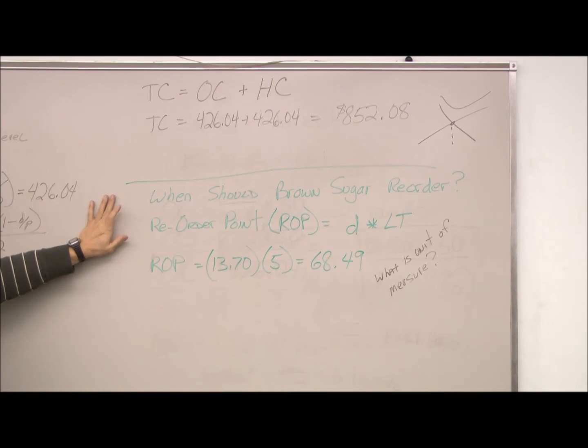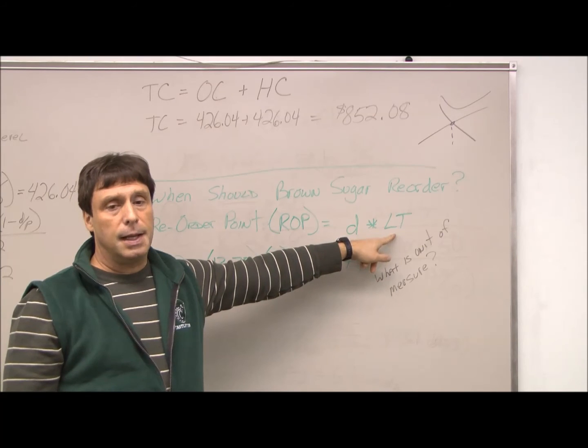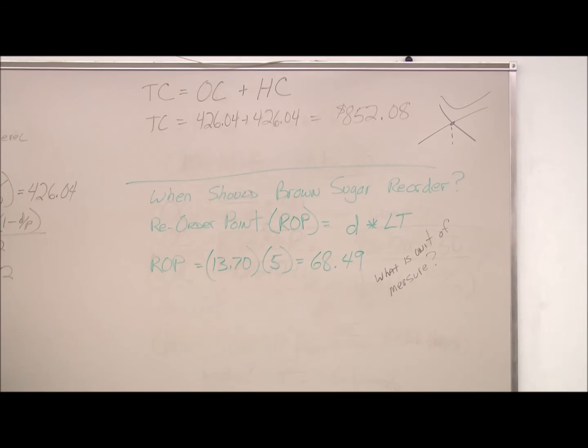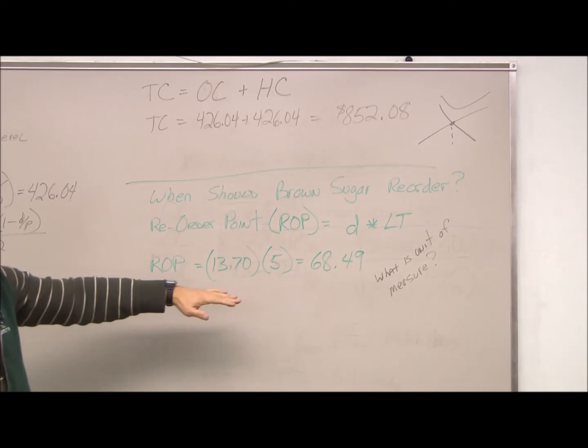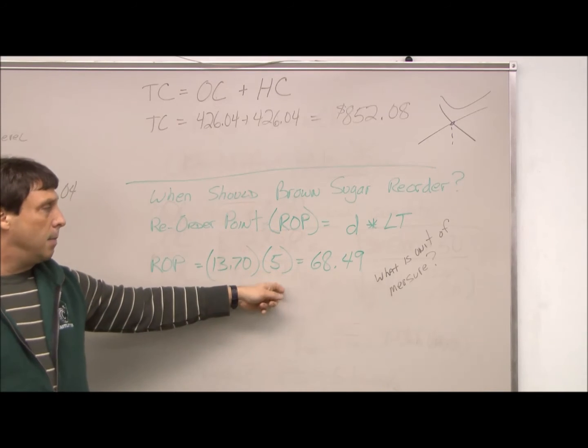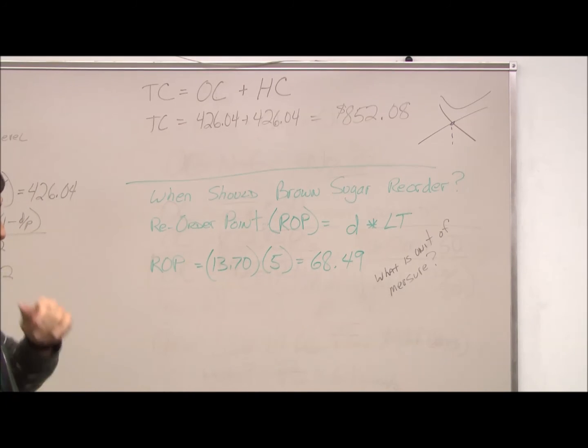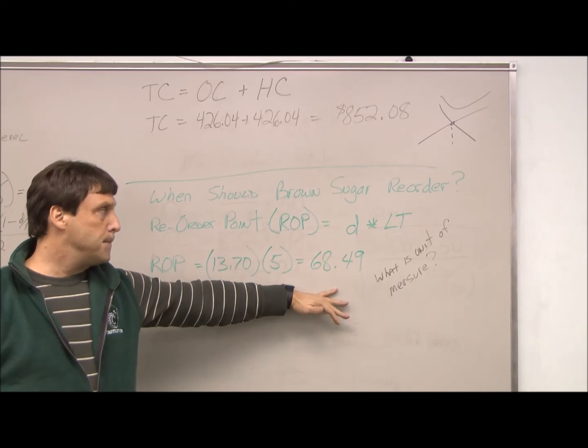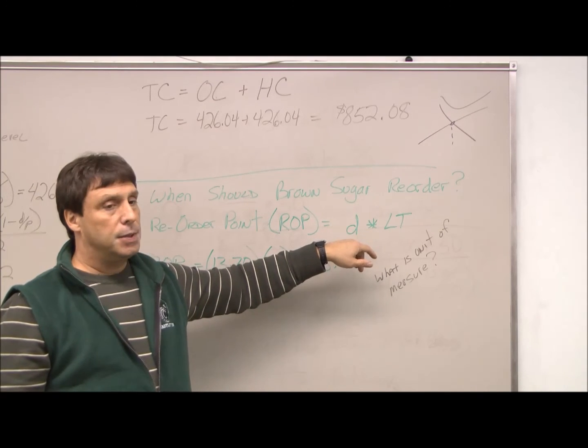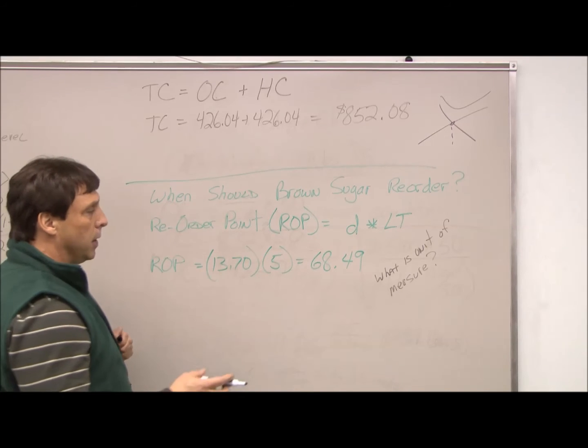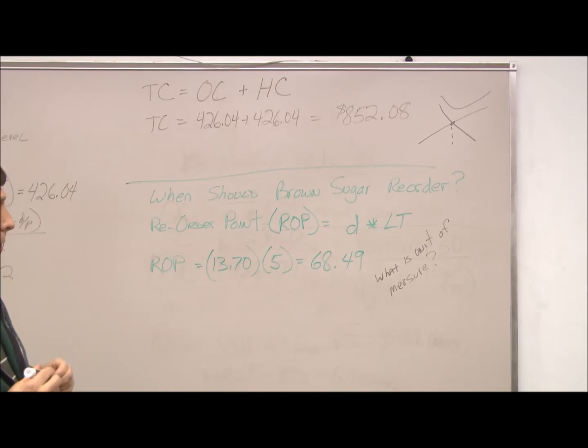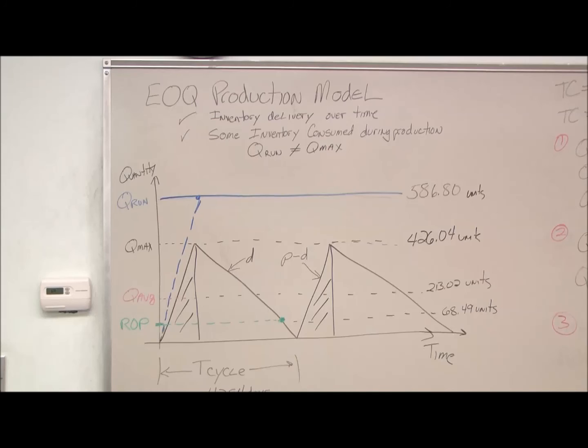The last question I wanted to address is, when should Brown Sugar reorder? So we have to calculate the reorder point, which is simply our daily demand times the lead time, how long it takes us for suppliers to send us our supplies. So we've already calculated our daily demand, which is 13.7. We were given the lead time of five days, so it comes out to 68.49. Typically, again, you'd round it up to 69 in industry. What is the unit of measure here? It's demand times lead time, so units times days. So this would be in units or, you know, enough to make one-pound bags of wild horses' oats.